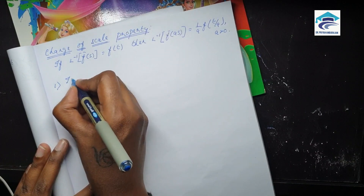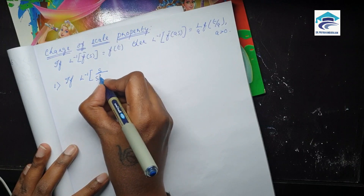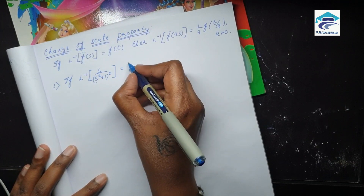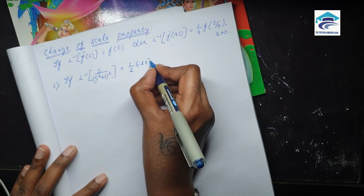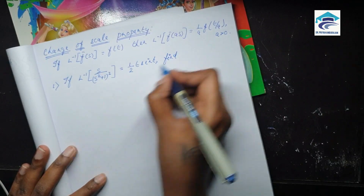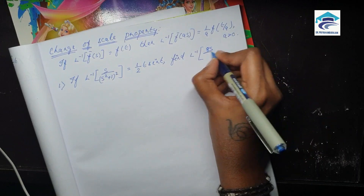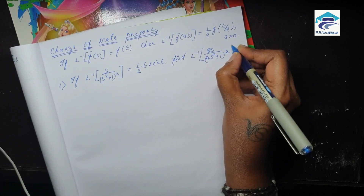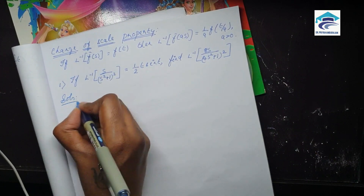First problem: if L inverse of s by (s² + 1)² is equal to 1 by 2 times t sin t, find L inverse of 8s by (4s² + 1)².